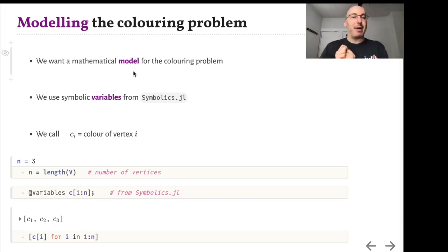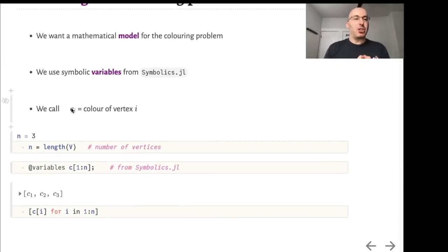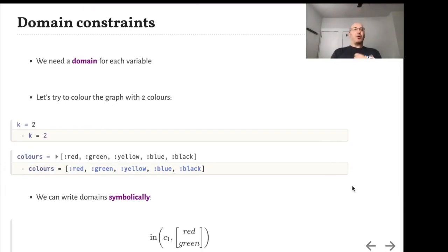We want to model this mathematically using symbolic variables from the symbolics.jl package. Let's call Ci the color of vertex number i. So n is the number of vertices, and we define symbolic variables c1, c2, and c3. Those are going to be the colors at each vertex. We have to specify where those colors live. We need a domain for each variable.